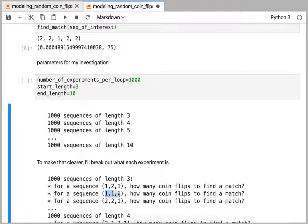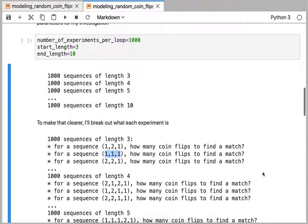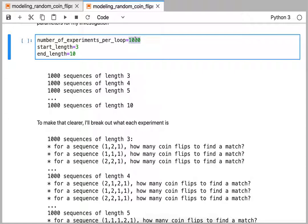How many coin flips does it take to get this length three list, so like this is like tail, tail, tail. And so I'm going to do that a thousand times, and I'm going to repeat the same measurement for a thousand times of sequence of length four. So I basically have three parameters: the number of things that I'm matching for in each length, and then I'm going to investigate from sequence lengths three through ten.